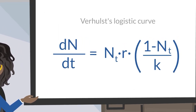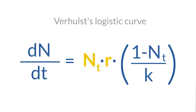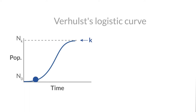dn over dt equals nt times r times 1 minus nt over k. Where dn over dt is the growth rate of the population — in other words, the change in number of individuals in the population per change in time. nt and r are as defined previously, where r is the intrinsic rate of population increase, nt is the population size after a time delta t, and k is the carrying capacity, which is the maximum number of individuals that a given ecosystem can sustain. When the population is at carrying capacity, it cannot grow further — in other words, dn over dt equals 0.